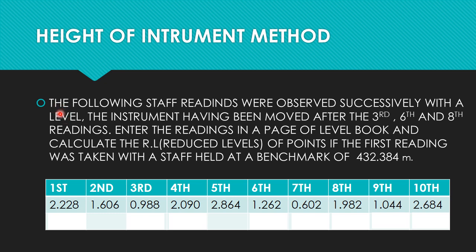The following staff readings were observed successively with a level, the instrument having been moved after the third, sixth, and eighth readings. Enter the readings in a page of the level book and calculate the reduced levels of the points, if the first reading was taken with a staff held at a benchmark of 432.384. The instrument is moved after the third, sixth, and eighth readings.